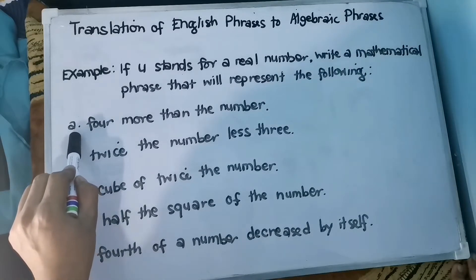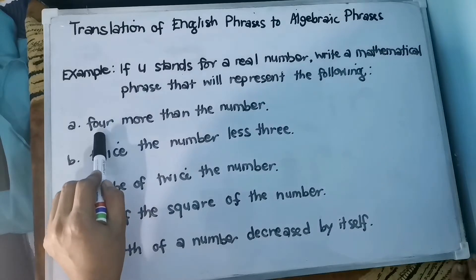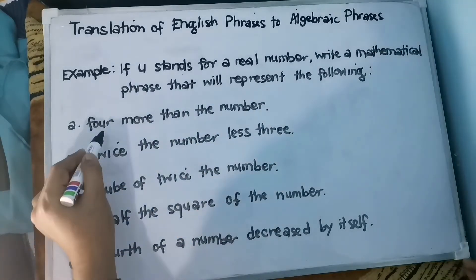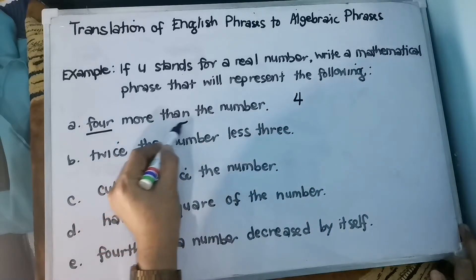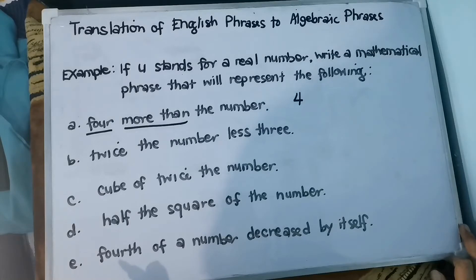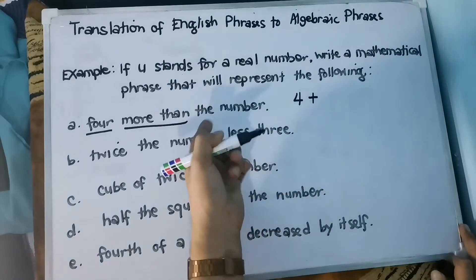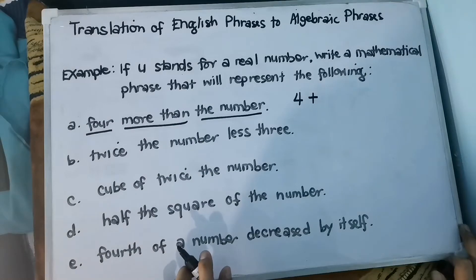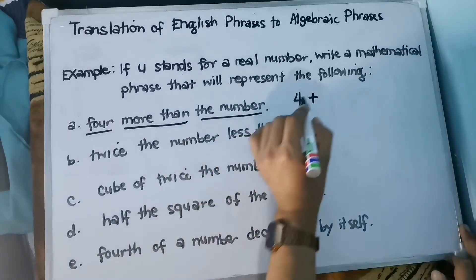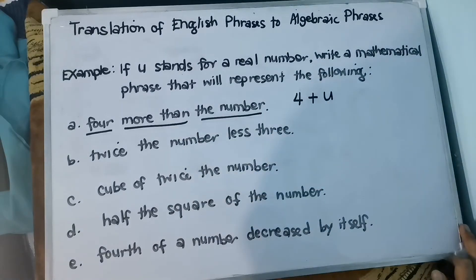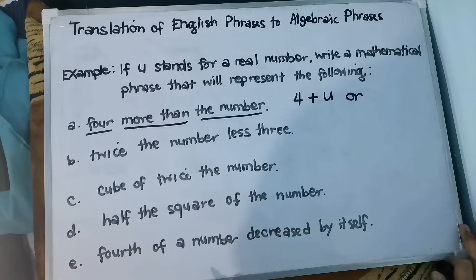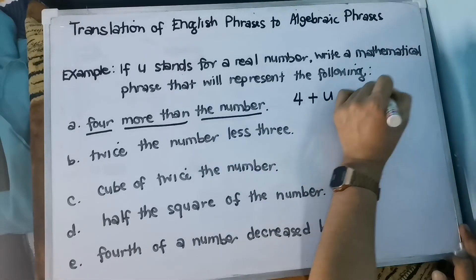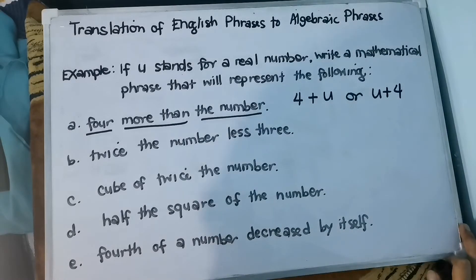Let's start with the first one. The English phrase is: four more than the number. We have 4 as a numerical value, and more than is the keyword for addition. So we write it as 4 + u. Since addition has the commutative property, we can also write it as u + 4.